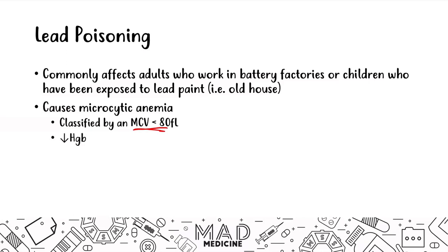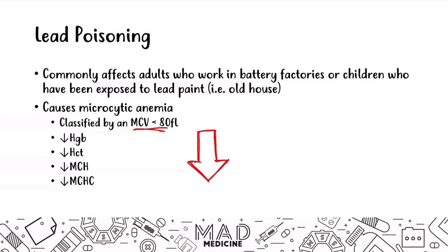Along with a decreased MCV, you'll also see a decrease in your hemoglobin, hematocrit, MCH, and MCHC. In microcytic anemias, all of your red blood cell measurements and red blood cell indices are going to go down. That is the main finding when it comes to laboratory results for microcytic anemias.